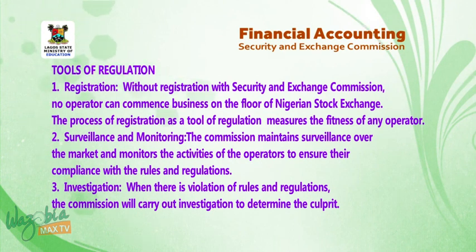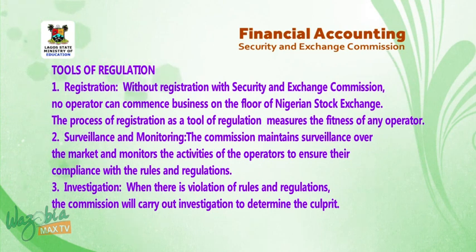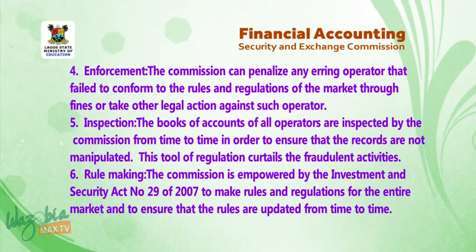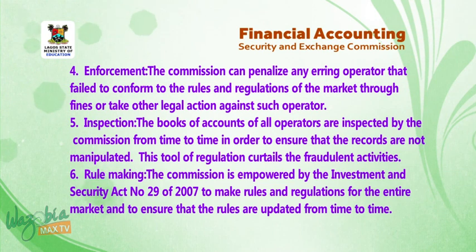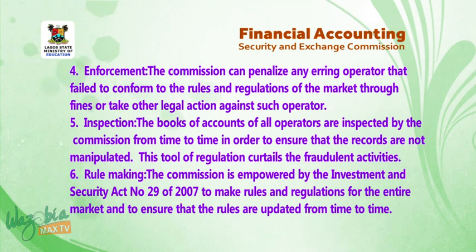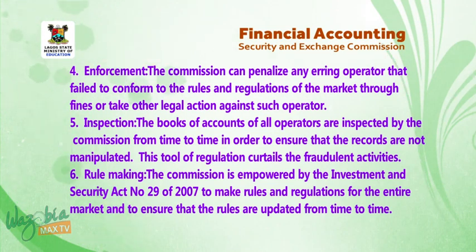2. Surveillance and monitoring — the Commission maintains surveillance over the market and monitors the activities of operators to ensure their compliance with the rules and regulations. 3. Investigation — when there is a violation of rules and regulations, the Commission will carry out an investigation to determine culpability. 4. Enforcement — the Commission can penalize any erring operator that failed to conform to the rules and regulations of the market through fines, or take other legal action against such operator. 5. Inspection — the books of accounts of all operators are inspected by the Commission from time to time in order to ensure that the records are not manipulated. This tool of regulation curtails fraudulent activities.